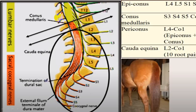Conus medullaris is between S3, S4, S5, and coccygeal 1 — that portion of the spinal cord — and as far as the vertebral body level is concerned, it is at L1 level. Above that we call epiconus. Epiconus plus conus medullaris make it periconus, and the roots are called cauda equina, containing totally 10 root pairs right from L2 onwards up to coccygeal.